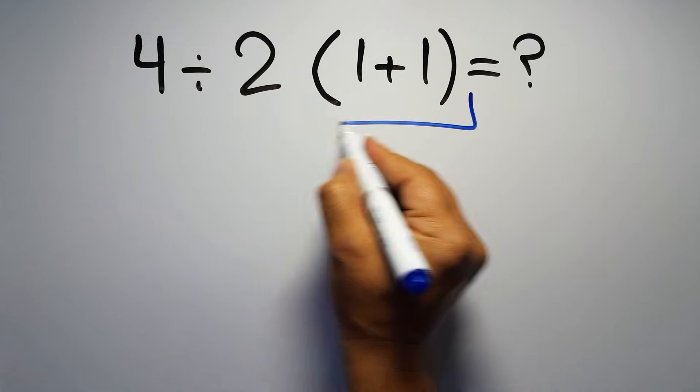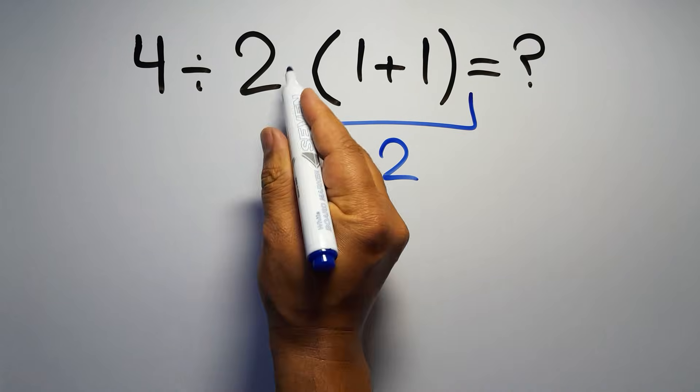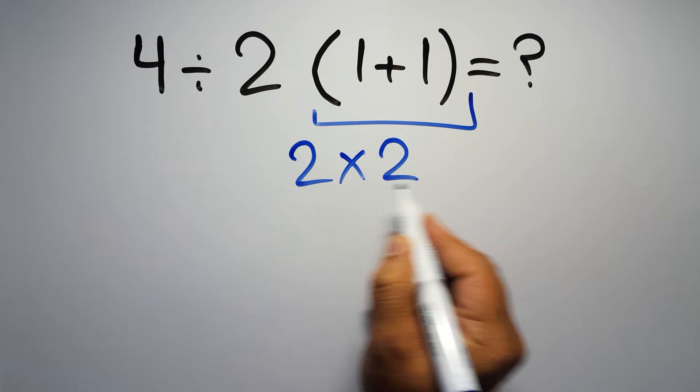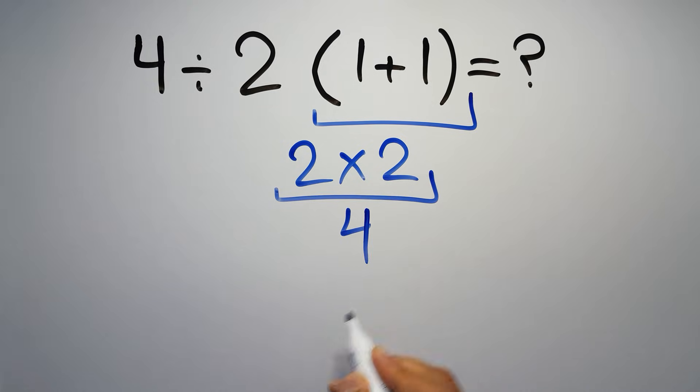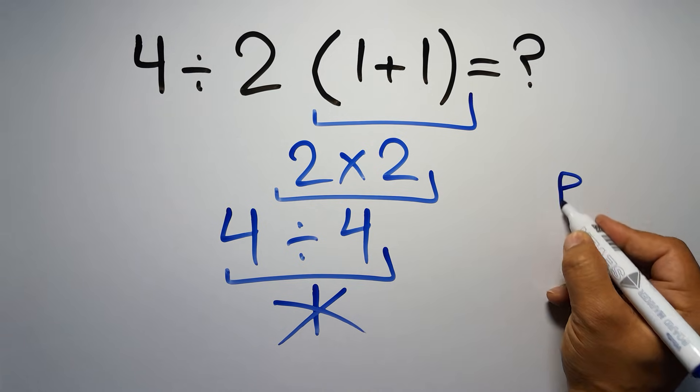1 plus 1 gives us 2, and 2 times 2 equals 4, so 4 divided by 4 is just 1. But this answer is not correct because according to the order of operations, first we have to do parentheses, then